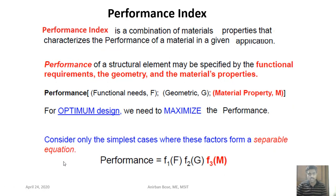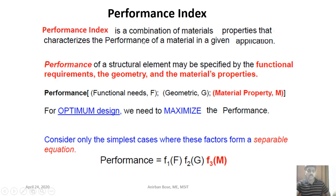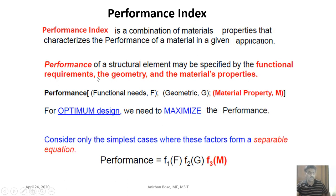A very important parameter required to achieve a certain functional requirement is called the performance index. The performance index is basically a combination of material properties that characterizes the performance of a material in a given application. The objective is always to increase this performance index, and it depends on the particular application. We will give examples to further clarify this concept.